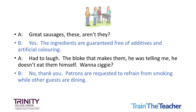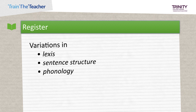Going back to this conversation — what makes speaker A or B formal or less formal? You've probably come up with examples where there were instances of formal and less formal lexis, such as 'patron' or 'siggy.' Examples of formal or less formal sentence structure, such as grammatically incomplete sentences versus passives. Phonological variations might include the use of contractions or connected speech in less formal speech.